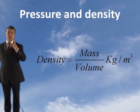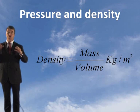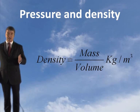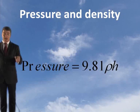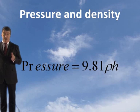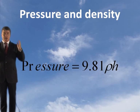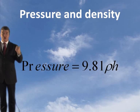So what is density? Density is mass per unit volume, measured in kilograms per metre cubed. Now, we said earlier that pressure is force per unit area. These two principles link together to make a very important formula to remember: pressure equals 9.81 — which is the force due to gravity — times rho, which is the density, times height. Those two principles combine to give us this formula for hydraulics.